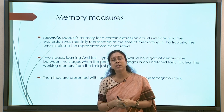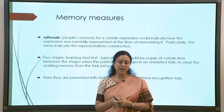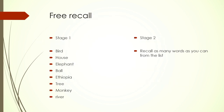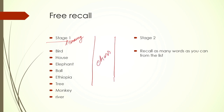In the first stage, participants are given a list of words to read and memorize. Then there is a gap — sometimes simply a gap, sometimes a completely different unrelated task is incorporated in the middle. Then comes stage two, where the person has to either recall freely. In free recall, there is no constraint — you simply remember and try to recall as many words as you can from the previously given list.